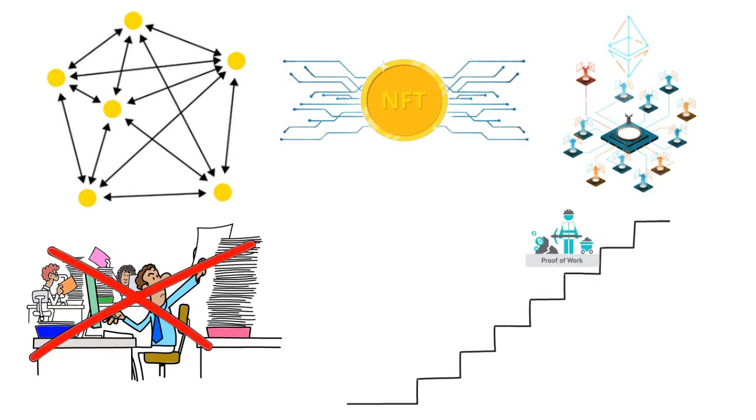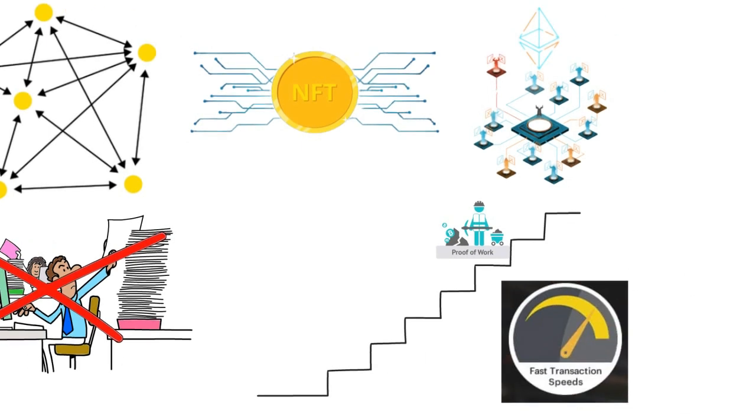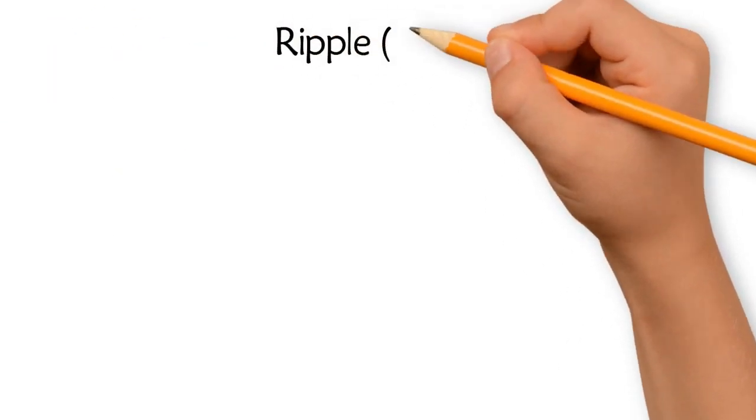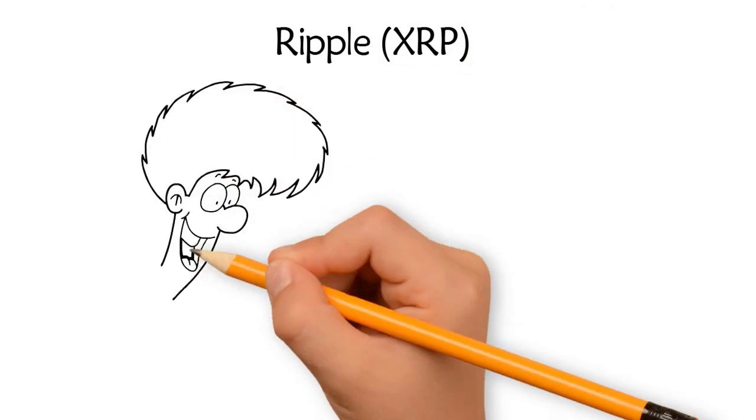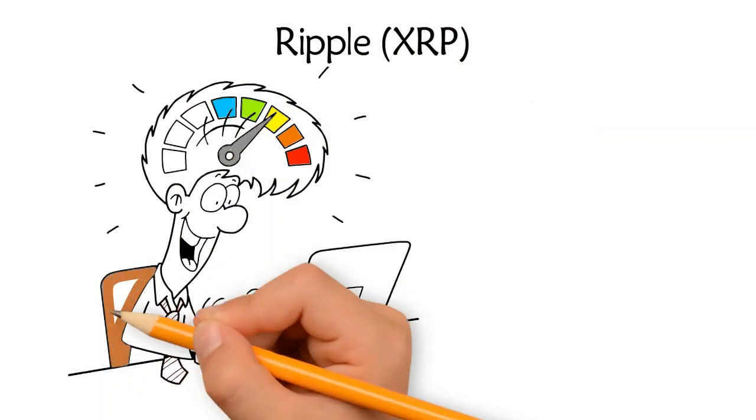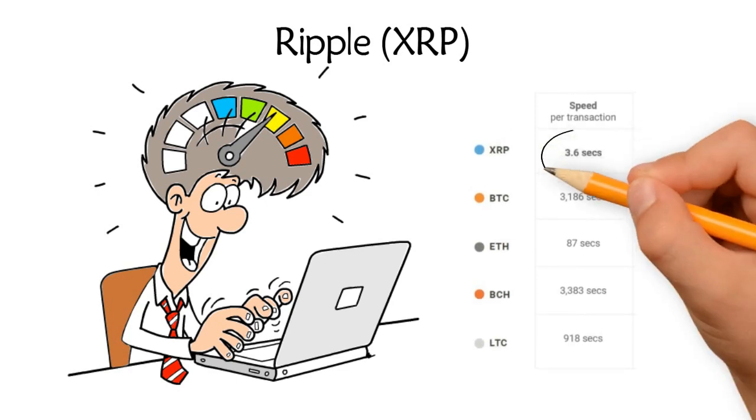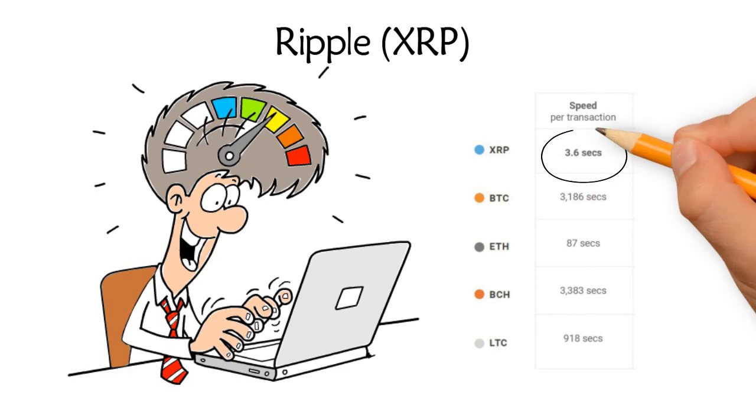Ripple (XRP): Ripple Labs developed the XRP cryptocurrency with the primary objective of increasing the speed of transaction processing. This has greatly helped the banking and financial institutions achieve faster final settlements. As with XRP, the transactions are completed in a few seconds.